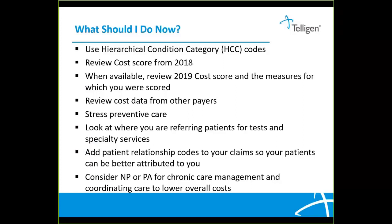Make sure that you are considering your nurse practitioners and physician assistants for chronic care management and coordinating care to overall lower those costs. Make sure that patient relationship codes are added to your claim so that patients can be better attributed to you — this is also a new improvement activity for 2020. Those are some tips for what you can do now.